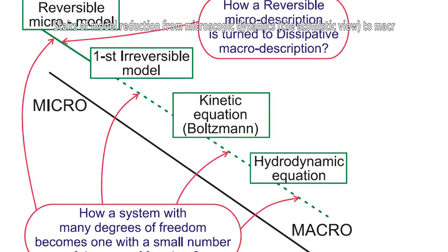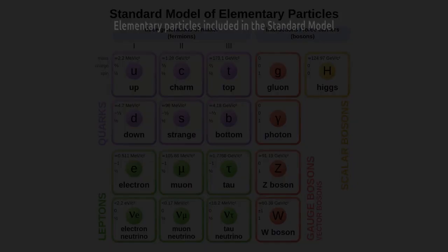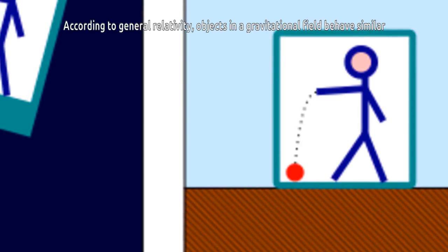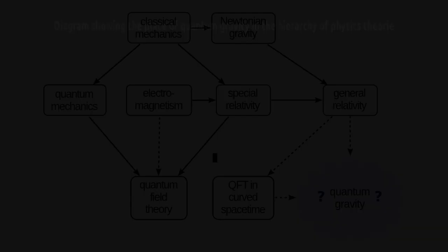Two fundamental theories capture the majority of the fundamental phenomena of physics: quantum field theory, which provides the mathematical framework for the standard model, and general relativity, which describes space-time and gravity at macroscopic scale. Hilbert considered general relativity as an essential part of the foundation of physics. However, quantum field theory is not logically consistent with general relativity, indicating the need for a still unknown theory of quantum gravity. Hilbert's sixth problem thus remains open.